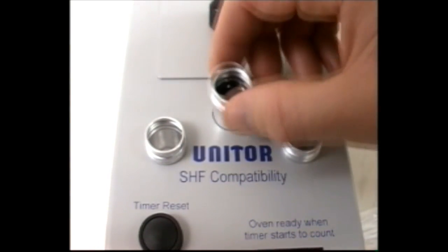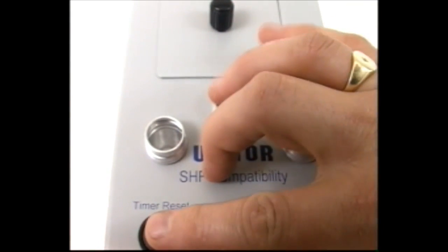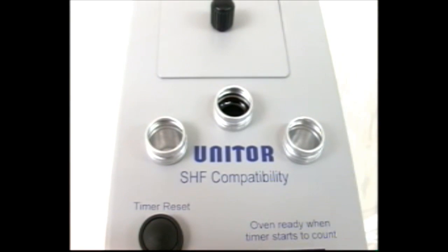After the unit is fully heated to 100 degrees, place the tube in one of the preheat holes. Press reset, then wait for the timer to count to 20 minutes.